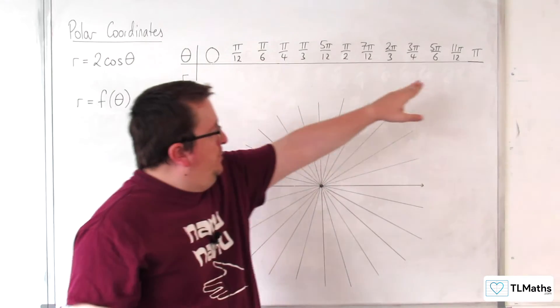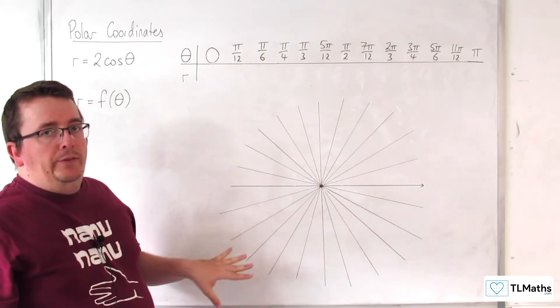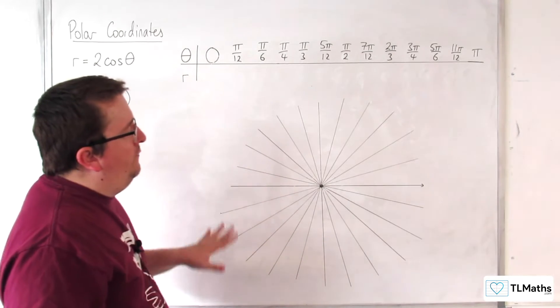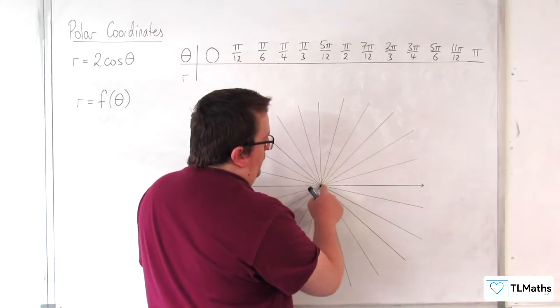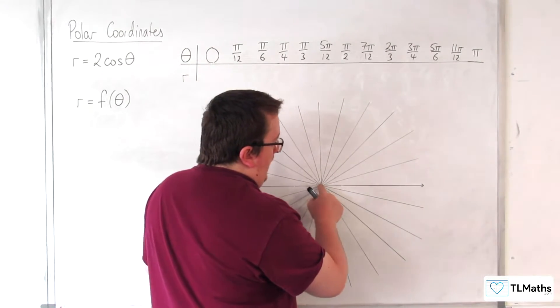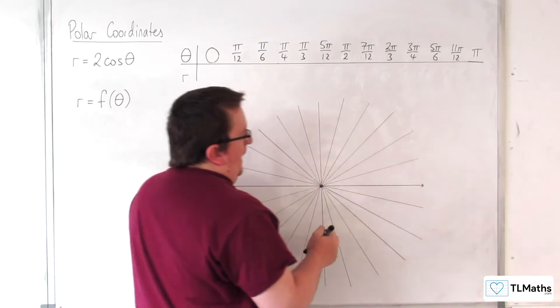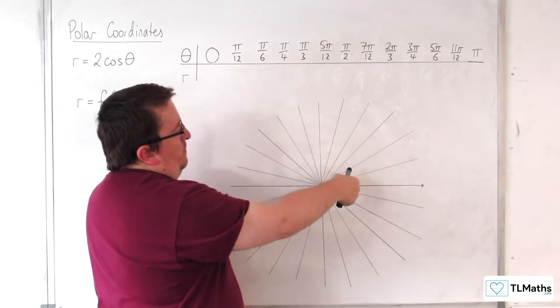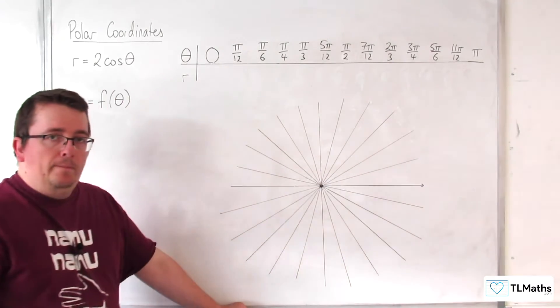So I'm going to fill out this table and then plot the points on this graph. What I've done is I've got the pole here and the initial line, and each of these lines is separated by an angle of pi over 12.